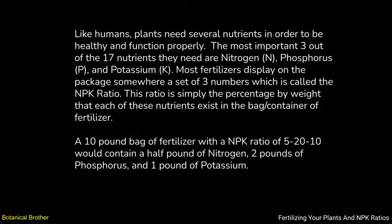Like humans, plants need several nutrients in order to be healthy and function properly. The most important three out of the 17 nutrients they need are nitrogen, phosphorus, and potassium. Most fertilizers display on the package somewhere a set of three numbers which is called the NPK ratio. This ratio is simply the percentage by weight that each of these nutrients exists in the bag or container of fertilizer.